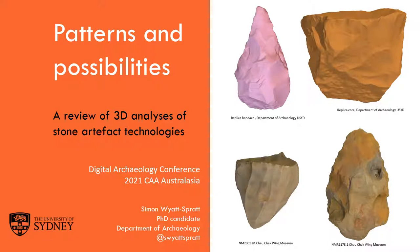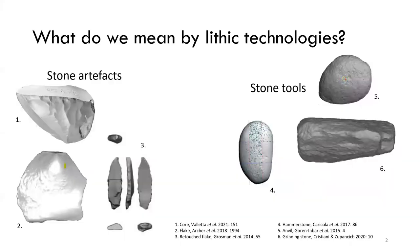Before we go any further, let's get some quick definitional issues out of the way. By lithic technologies, I'm referring to stone artefacts — objects such as flakes, cores, retouched flakes, and groundstone artefacts made by humans or our ancestors and near relatives. By stone tools, I mean objects used but not necessarily intentionally shaped, like anvils, hammerstones, or grinding stones. I'm also including knapped glass artefacts from recent colonial contexts, and experimental and ethnographic assemblages, as well as archaeological ones.